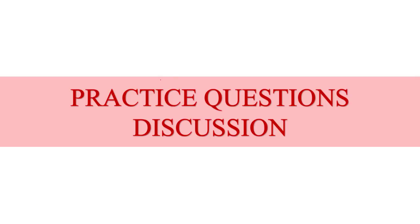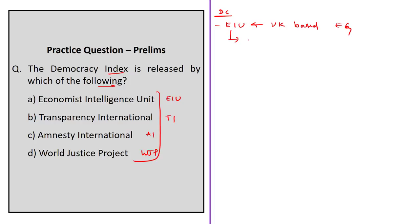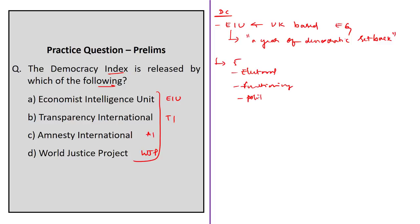Now let us start the practice question session. The first question asks: the Democracy Index is released by which of the following? Options are: Economist Intelligence Unit, Transparency International, Amnesty International, or World Justice Project. The Democracy Index is released annually by the Economist Intelligence Unit, a sister company of the UK-based Economist Group. The 2019 index was released under the title 'A Year of Democratic Setback and Popular Protest' for 167 countries, calculated on five parameters: electoral process and pluralism, functioning of government, political participation, democratic political culture, and civil liberties.